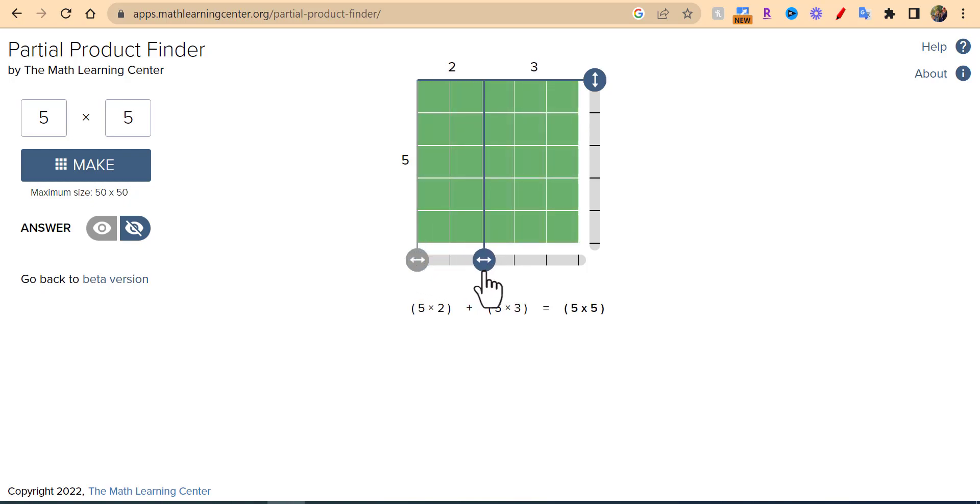We could do this: you can see 5 groups of 2, which is 10, plus 5 groups of 3, which equals 15, so that equals 25. You can go ahead and show right there the answer: 10 plus 15 equals 25. Now you can change this as well.